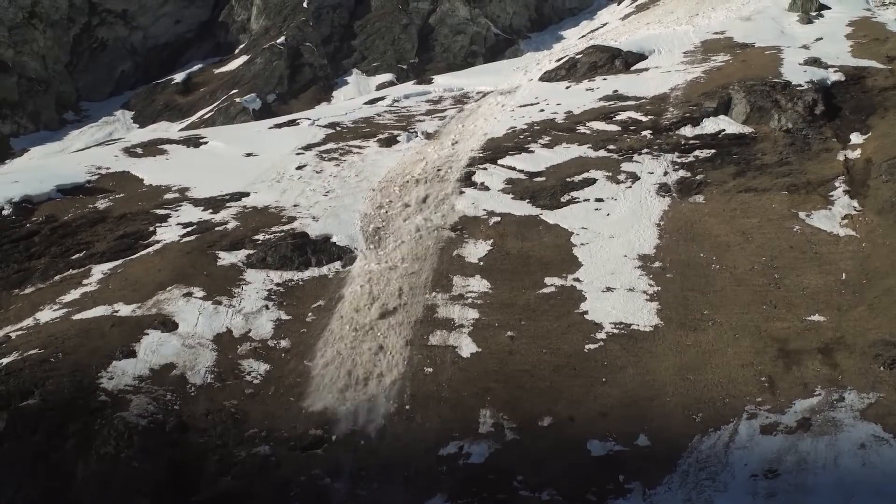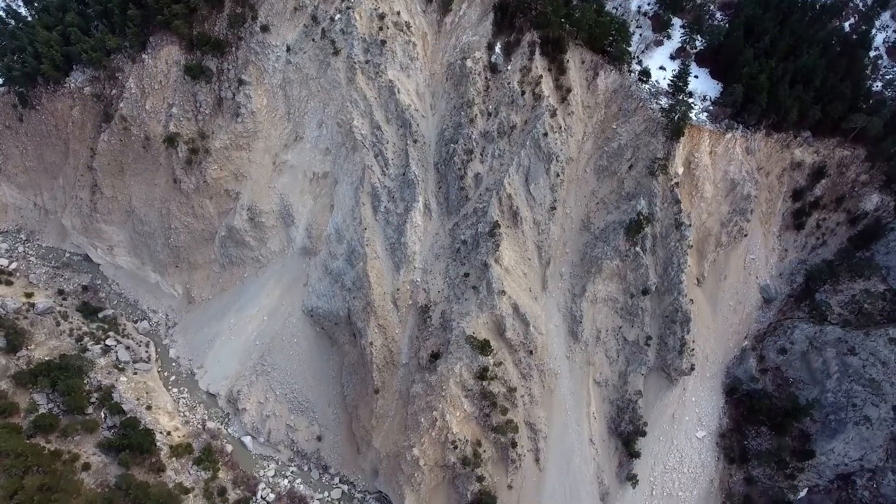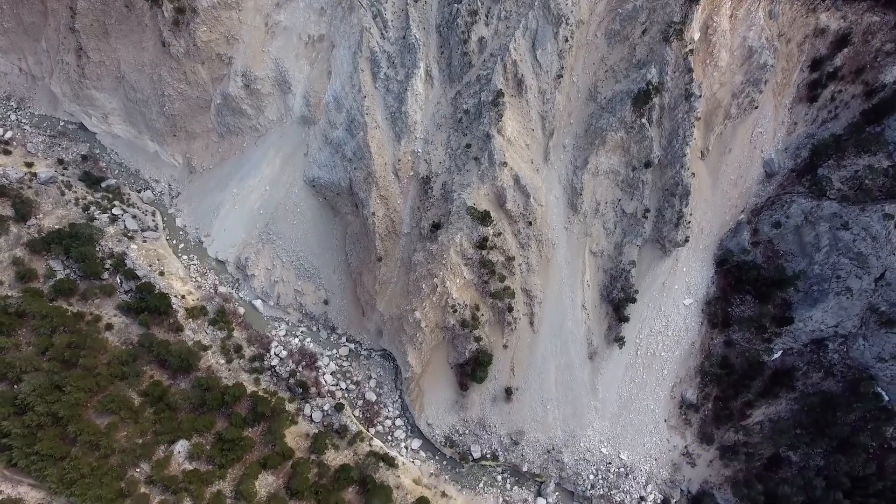An earthquake can trigger a landslide that reshapes a mountain, can raise or lower the ground level, or can even change the course of a river.